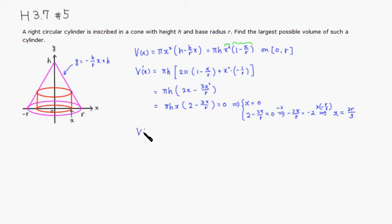Alright, then since we have critical numbers at 0 and 2r over 3, and we have r, so we can just compute V of 0, and V of 2r over 3, and V of r. Alright, the first one and the last one are easy. If you plug in 0, of course the volume is going to be 0. If you plug in r, you can see that 1 minus r over r is 0, so it's 0 again.